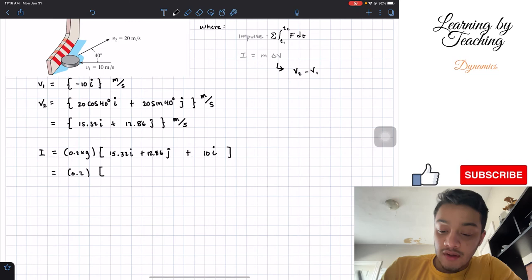We're going to have 0.2 multiplied by 15.32 plus 10, both of them in the i direction. So we have 25.32 in the i direction plus 12.86 in the j direction.